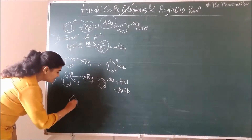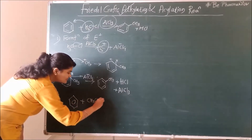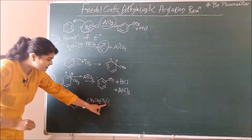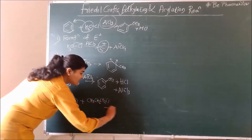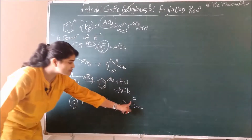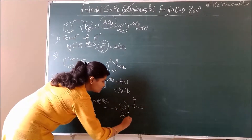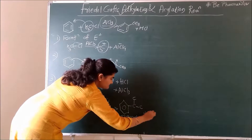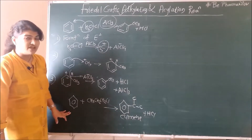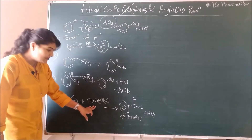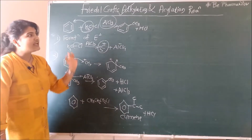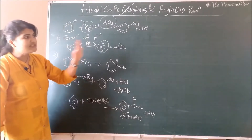For example, benzene when treated with CH3CH2CH2Cl — N-propyl chloride — is expected to yield N-propylbenzene. But instead it gives isopropylbenzene, which is also called cumene, plus HCl. So N-propylbenzene cannot be prepared using Friedel-Crafts alkylation. This problem can be solved with the help of Friedel-Crafts acylation reaction, which we will see later on.